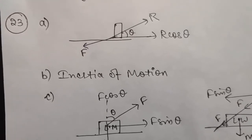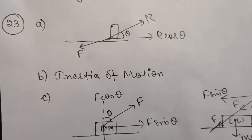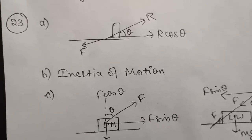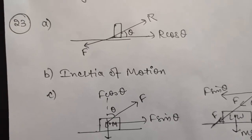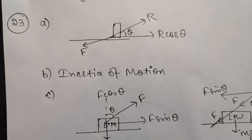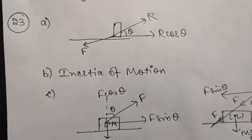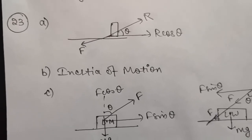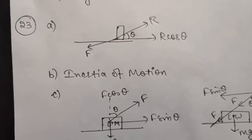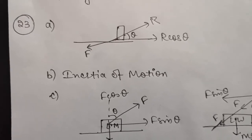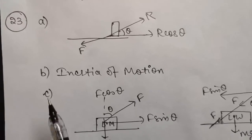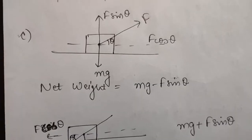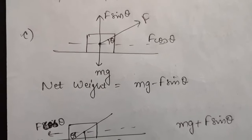Part b: passengers are thrown forward from their seats when a speeding bus stops suddenly. This happens due to inertia of motion. When the bus was moving, our bodies were also moving. When the bus stops suddenly, our bodies continue to move forward due to inertia, causing a jerk in the forward direction.